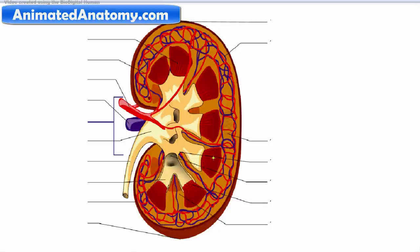The cortex contains the renal corpuscles, the renal tubules and also it contains the cortical blood vessels and collecting ducts.